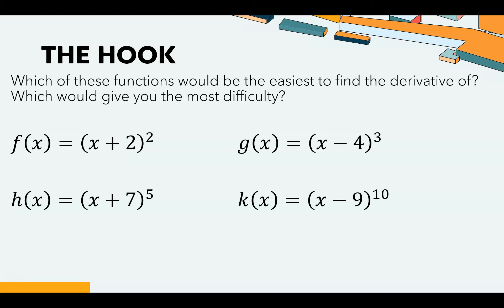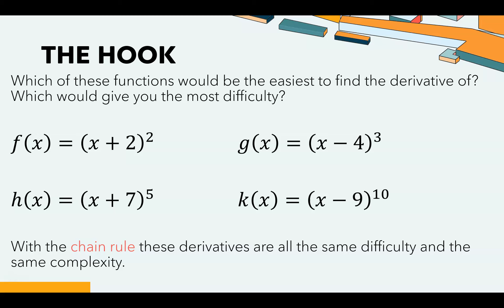To show you why you'd want to know the chain rule: without it, each of these four functions requires expanding to find the derivative. f(x) = (x+2)² is no problem. g(x) = (x−4)³ is kind of a problem. But (x+7)⁵ or (x−9)¹⁰ — I really don't want to expand those. Once you know the chain rule, every single one of these has the same difficulty, the same level of complexity, the same amount of work.